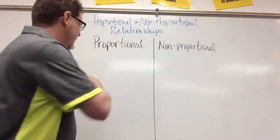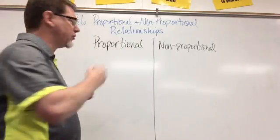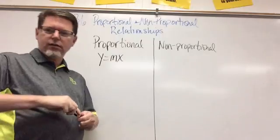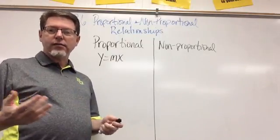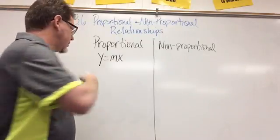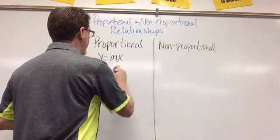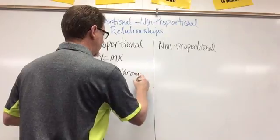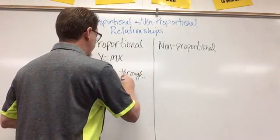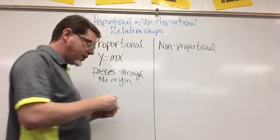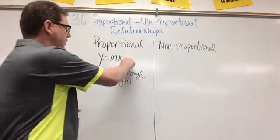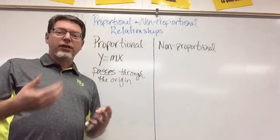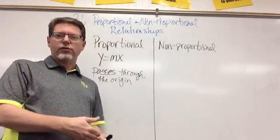So let's first start with an equation. A proportional equation is going to look something like y equals mx. Because a proportional relationship passes through the origin. And if you look at the function y equals mx, you see that there's no plus b. So the plus b would be 0, which means the y intercept is 0, which means it passes through the origin.